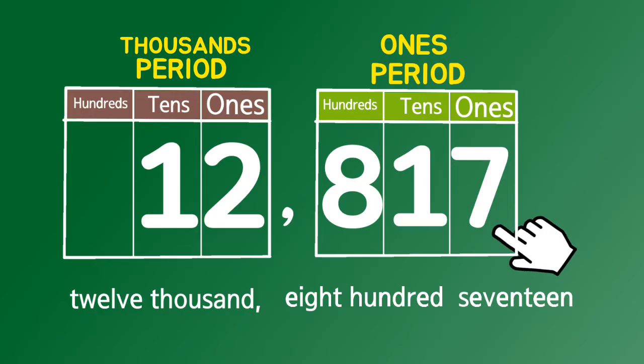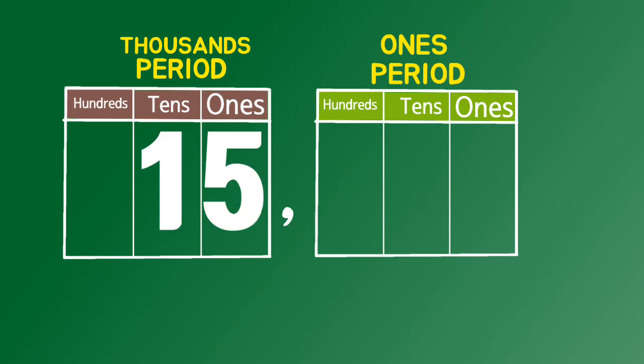I didn't mention one. For one's period. Twelve thousand, comma, eight hundred seventeen. Let's try some more.